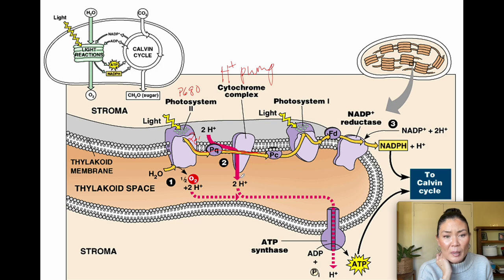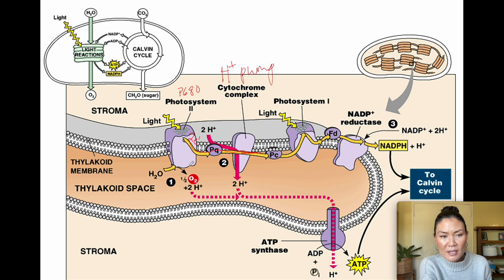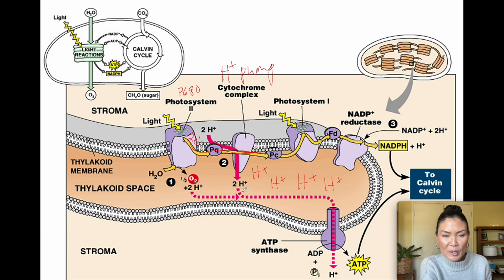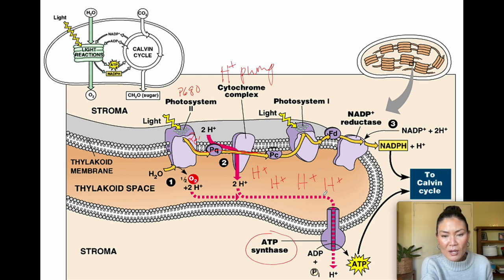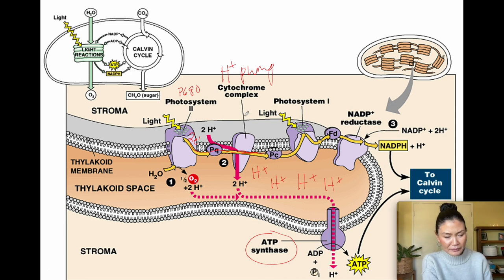The cytochrome complex is also a proton pump — just like in cellular respiration's electron transport chain, as the electron moves through it the pump pushes protons into the thylakoid space. This builds up a concentration gradient. Just as in cellular respiration, that concentration gradient can be used to make ATP: protons diffuse down their concentration gradient through ATP synthase into the stroma, making ATP.